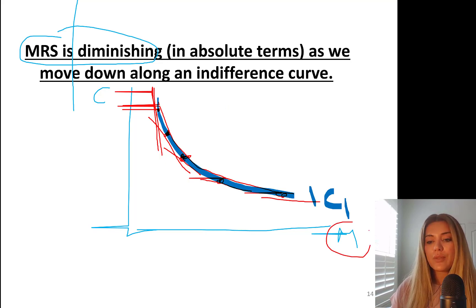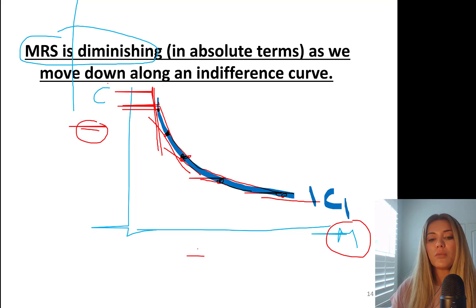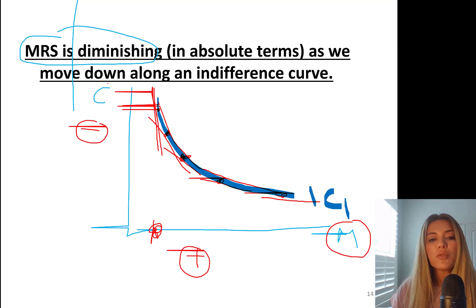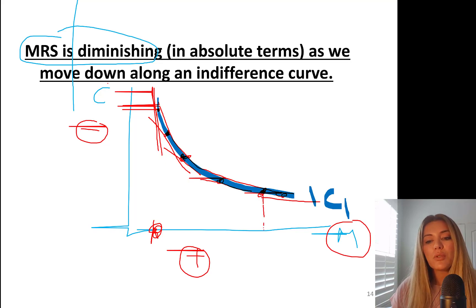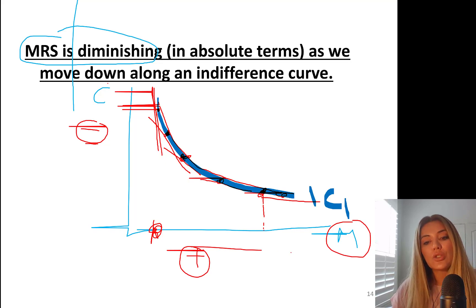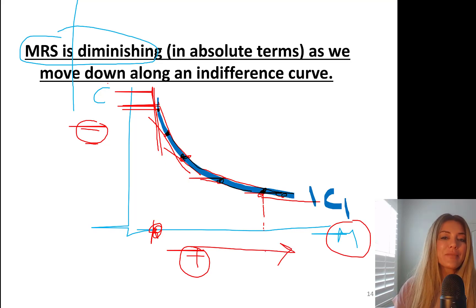What does the slope tell you? How many cakes are you willing to give up to gain one more movie? As you have fewer movies, you're willing to give up a lot of cakes to get one more, because you haven't seen any movies yet. But if you already have a lot of movies, you're willing to give up fewer cakes. The amount of cakes you're willing to give up goes down as you consume more and more movies.